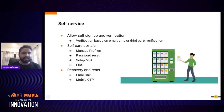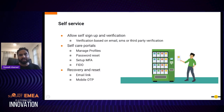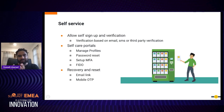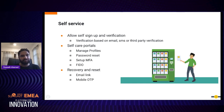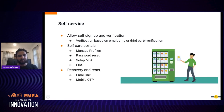Next is self-service. More and more businesses are trying to enable users to do things on their own. When it comes to identity interactions, you want to remove manual approvals as much as possible. When the number of users increases, businesses have to scale, and the easiest way to scale is to allow users to handle things themselves — self-care portals and allowing users to recover or reset their passwords on their own are options you can use.